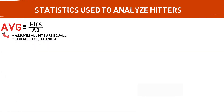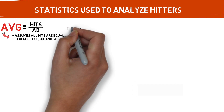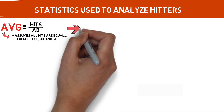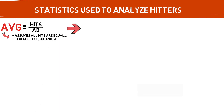For example, batting average grades all hits on the same scale. Whether it's a single, double, triple, or home run, they all equal one simple number — a hit. Also, it doesn't take into account any other ways of getting on base, such as walks and hit-by-pitches. Is batting average a bad statistic? No, but it definitely could use some more detailed information.